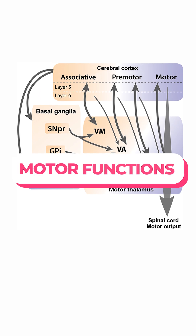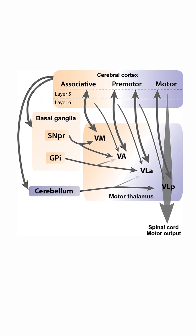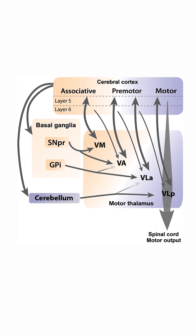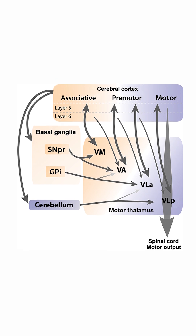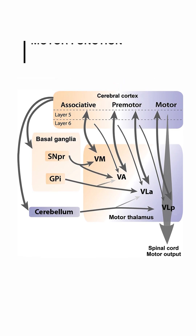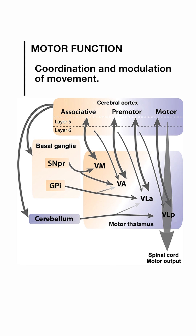Regarding motor functions, the thalamus receives information from the cerebellum and basal ganglia and relays it to the motor areas of the cerebral cortex, aiding in the coordination and modulation of movement.